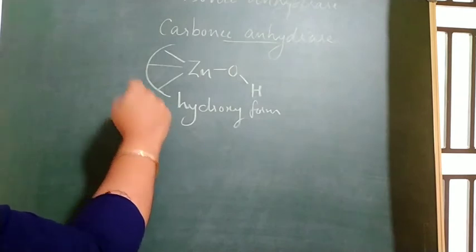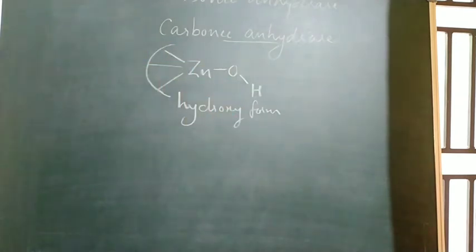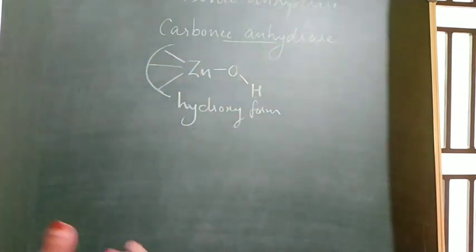The enzyme in its hydroxy form combines with a water molecule. The main action of carbonic anhydrase is carbon dioxide hydration. Carbon dioxide combines with the enzyme in its hydroxy form to produce carbonic acid.